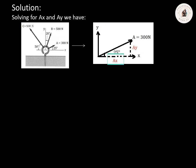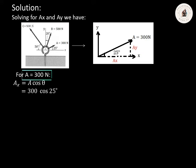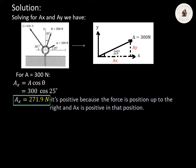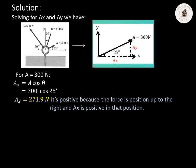Solving for AX: as you can see, AX is at the adjacent side. The formula for AX equals A multiplied by cosine theta, where theta is 25 degrees. So AX equals 300 multiplied by cosine 25 degrees. Using your calculator, we get AX equals 271.9 Newton. The sign convention for AX is positive because the force is positioned up to the right, and AX is positive in that position.